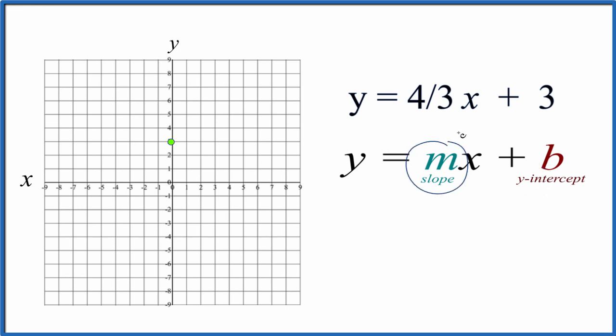Then the slope, m, that's 4/3, and we can think of this as rise over run. We rise 4, we run 3 to the right. So we go to our y-intercept, we rise 1, 2, 3, 4, and we run 1, 2, 3. And there's our line.